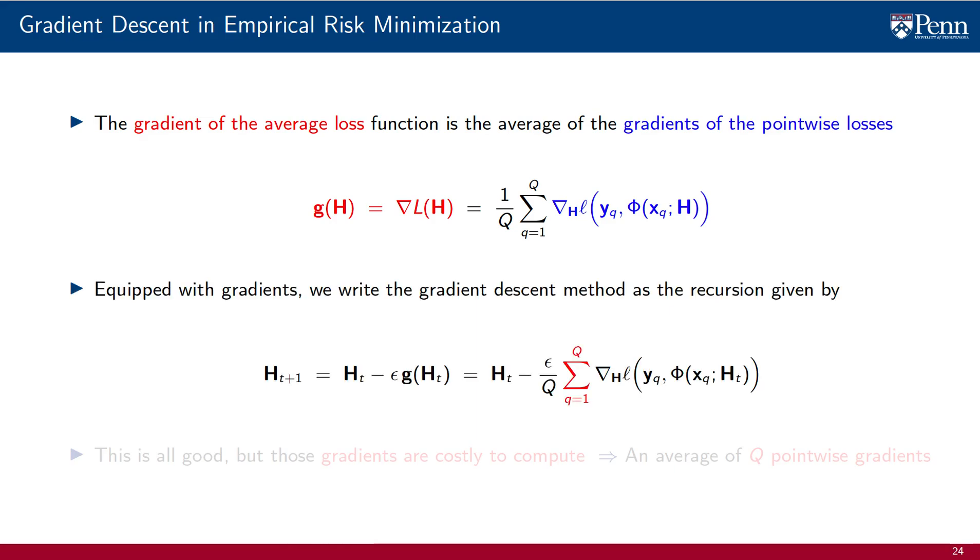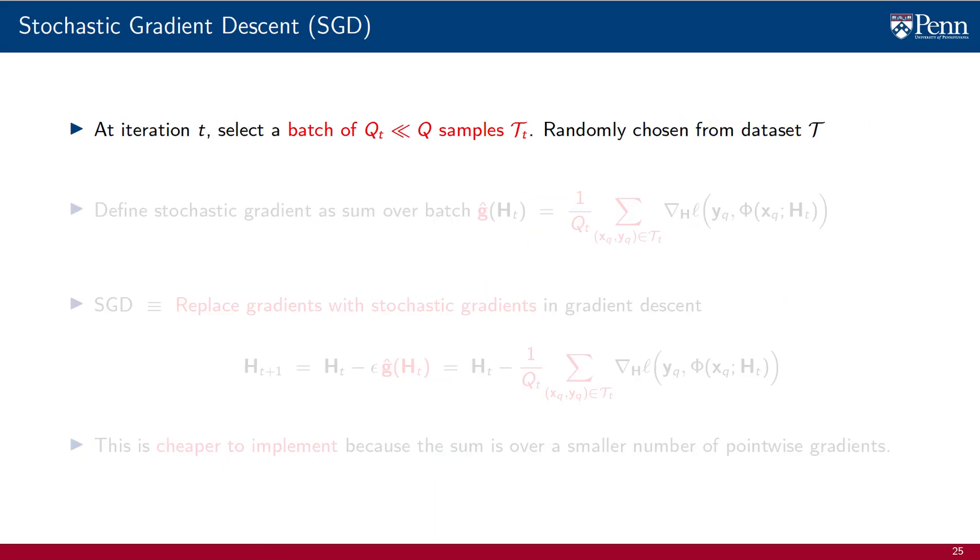Equipped with this specific gradient form, we can rewrite gradient descent for empirical risk as an iteration in which the parameter iterate h_t is updated by subtracting the average of the pointwise losses. This is all good, but those gradients have turned out very costly to compute. They are an average of q pointwise gradients. Even if we have a relatively moderate number of data samples, it can take a lot of computation to evaluate.